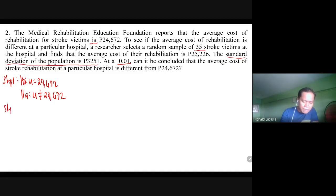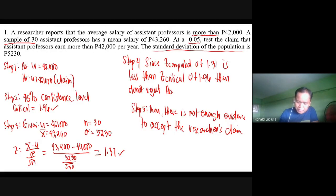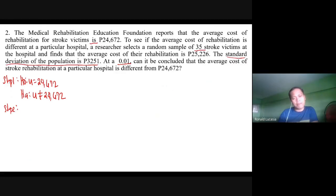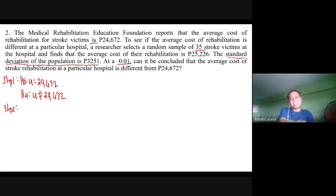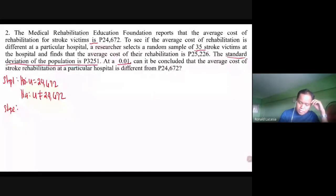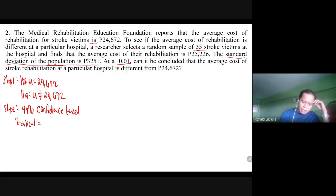Step two: find the critical value. We use Z-test because the population standard deviation is given. The significance level is 0.01, which corresponds to a 99% confidence level. Therefore, the Z-critical value is 2.58.